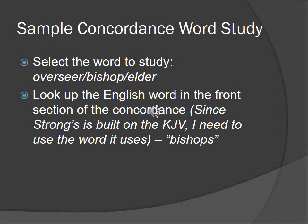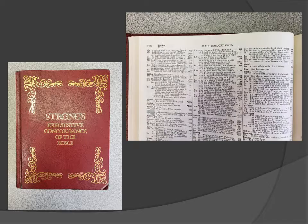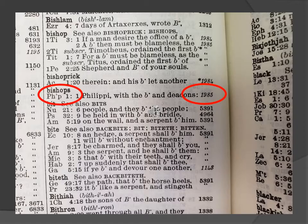I'll pick two words from my passage — verses one and two of chapter one — where we found some range in translation. The first one is the word 'overseer,' 'bishop,' or 'elder.' Notice the four translations used it three different ways, which says there might be something significant there. To look this up, I'm going to use Strong's concordance, which means I need to go to the front section and look up that King James word — 'bishops.' Here's a picture of the front cover of my Strong's Exhaustive Concordance. The top section says 'main concordance' — that's the biggest piece, the front section.